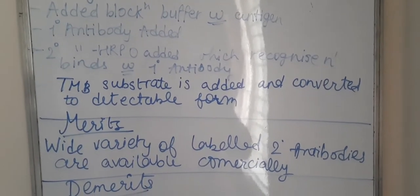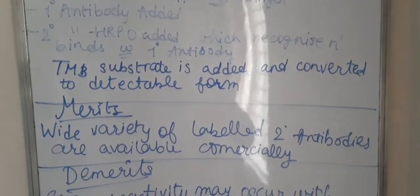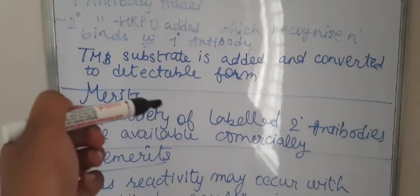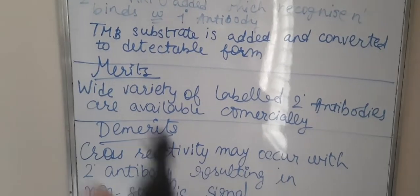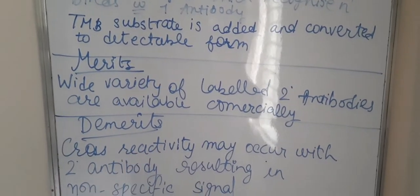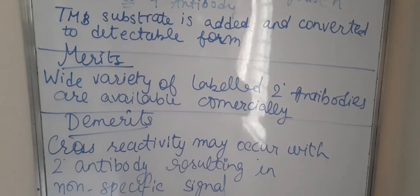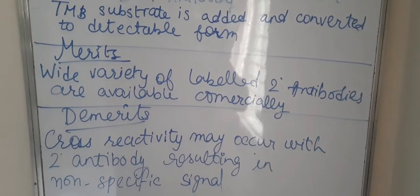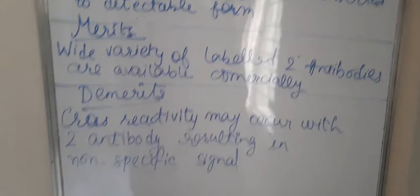Next, TMB substrate is added and converted to a detectable form. Now there are merits and demerits. The merits are that a wide variety of secondary antibodies are available commercially.